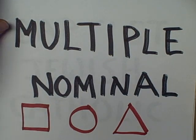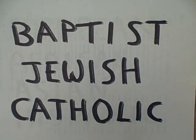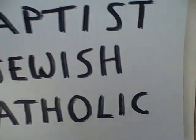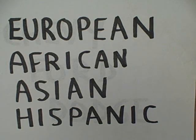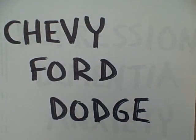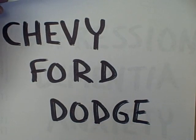But sometimes we have multiple nominal scaling, meaning we have more than two categories. We see this, for example, in denominational affiliation — we have Baptists, Jews, Catholics, Muslims, and Buddhists. Many categories. And then we see this in ethnicity: Americans of European extraction, African Americans, Asian Americans, Hispanic Americans. We see this in consumer behavior — which automobile did the customer purchase? Was it a Chevy, a Ford, or a Dodge?